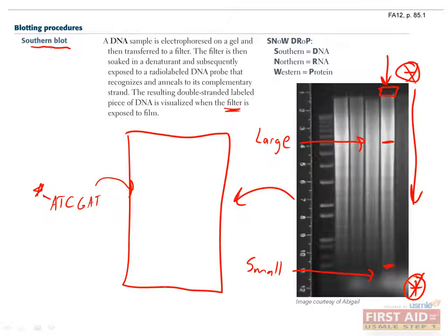If the target sequence you're looking for was not in your original sample, then the labeled probe will wash away and you won't see anything. But if it was in your sample, then it will stick to its complementary sequence and it will show up as a band on an x-ray film. This is the only thing you'll see, since only your probe is radiolabeled, so the rest of the DNA on the filter won't be visible.